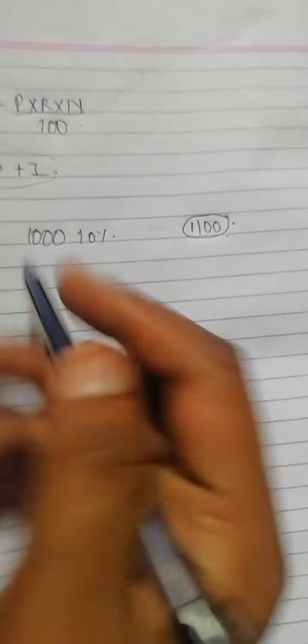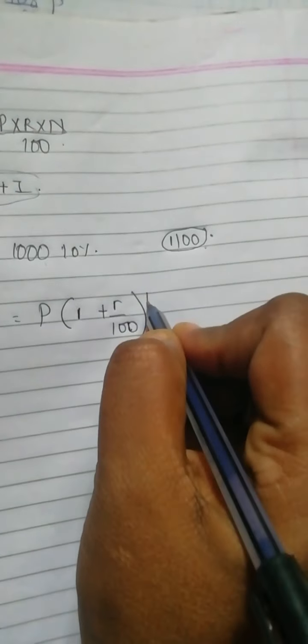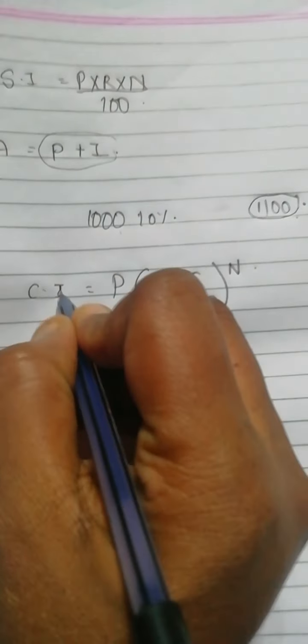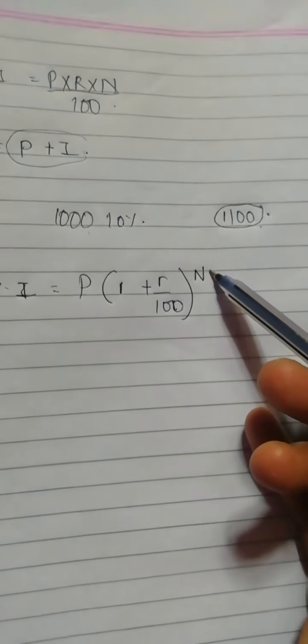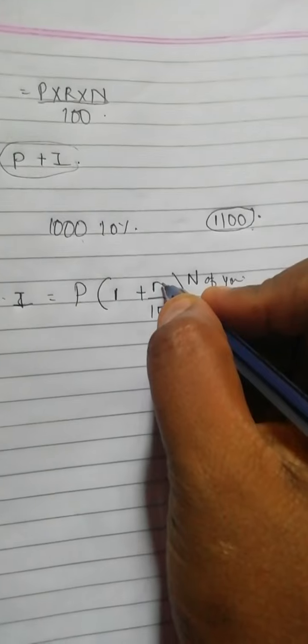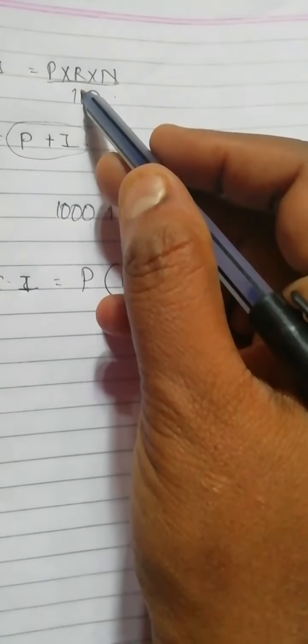So what is the formula for finding compound interest? Compound interest equals principal multiplied by 1 plus r upon 100, raised to n. Here, P is the principal amount, r is the rate of interest divided by 100, and n means number of years.